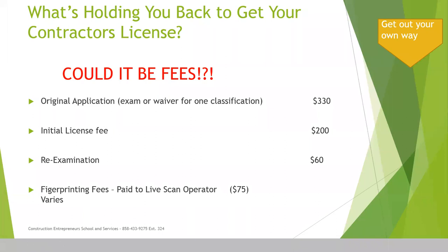So what's holding you back from getting your contractor's license? Could it be fees? I mentioned before in one of the other series that I was going to explain what the fees are. The original application — exam or waiver for one application — is $330. Once you fill out the application and send it in, you send in that $330. That $330 is non-refundable. You do not get that back, whether you are accepted or not.